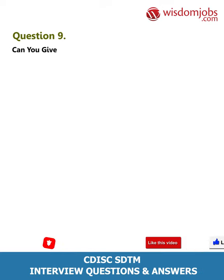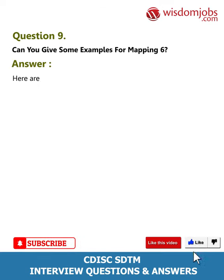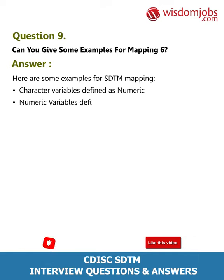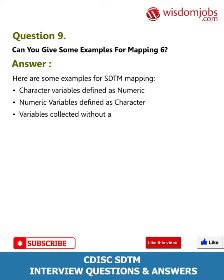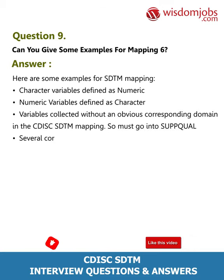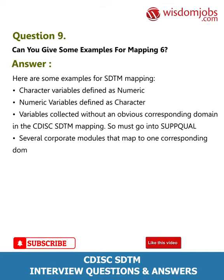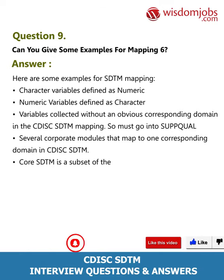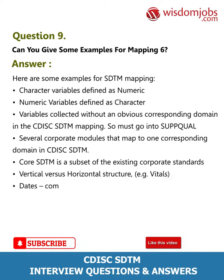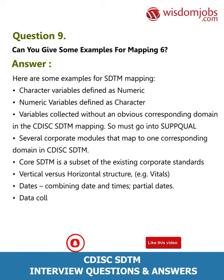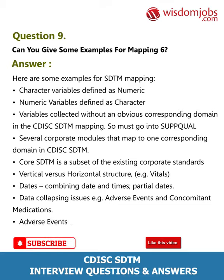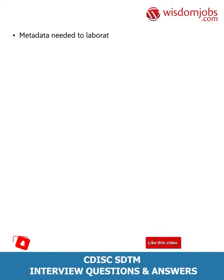Question 9: Can you give some examples of mapping challenges? Answer: Examples for SDTM mapping challenges include: character variables defined as numeric; numeric variables defined as character; variables collected without an obvious corresponding domain in CDISC SDTM that must go into SUPPQUAL; several corporate modules mapping to one corresponding domain; SDTM being a subset of existing corporate standards; vertical versus horizontal structure differences (e.g., vitals); combining dates and times; handling partial dates; data collapsing issues for adverse events and concomitant medications; adverse event maximum intensity; and metadata needed for laboratory data standardization.